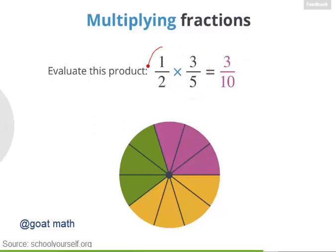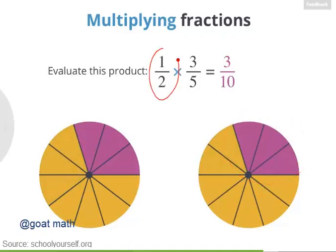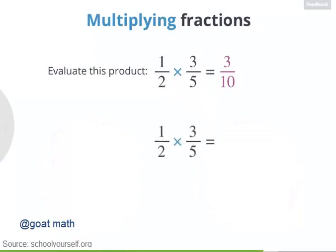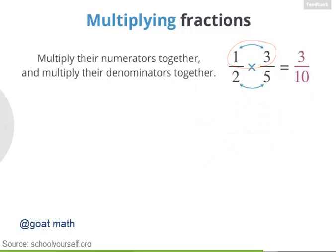You could also start with a half and then take 3 fifths of it. Dividing this half into five smaller slices and taking three of them gives the same purple region. Whether you're taking 1 half of 3 fifths or 3 fifths of 1 half, either way you'll get 3 tenths. There's a trick to quickly multiply fractions: multiply the numerators together — 1 times 3 equals 3 — and multiply the denominators together — 2 times 5 equals 10 — giving you 3 tenths. To multiply fractions, multiply their numerators together and their denominators together.